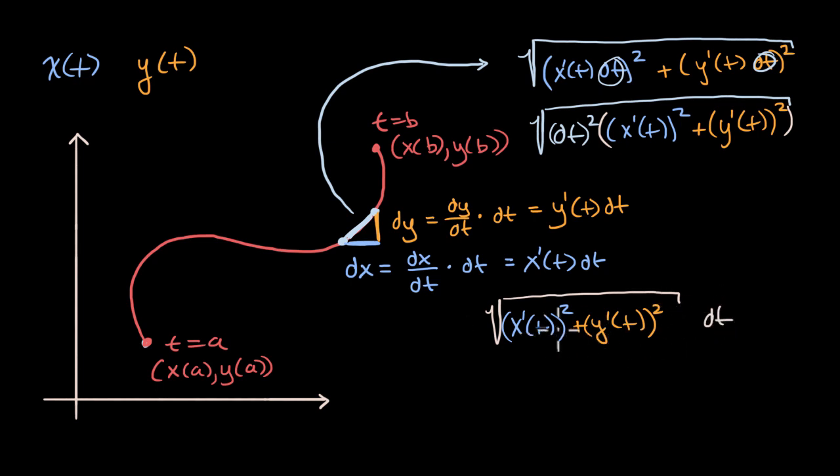So this is once again just rewriting the expression for this infinitesimally small change in our arc length. Well, what's lucky for us is in calculus we have the tools for adding up all of these infinitesimally small changes. That's what the definite integral does for us.